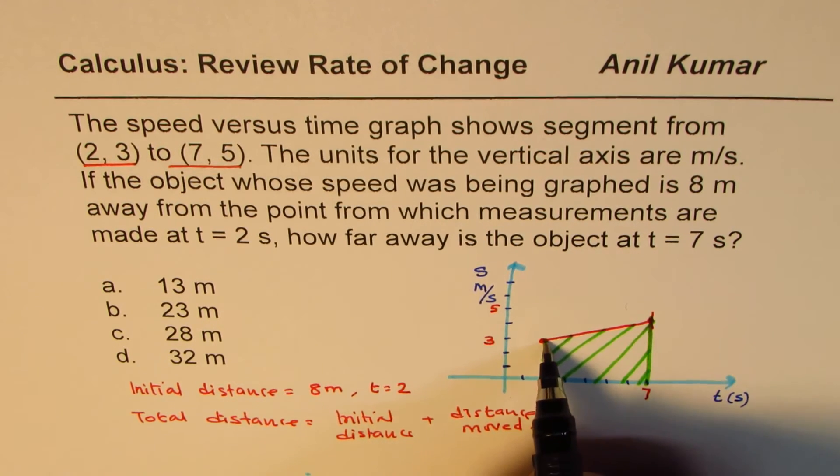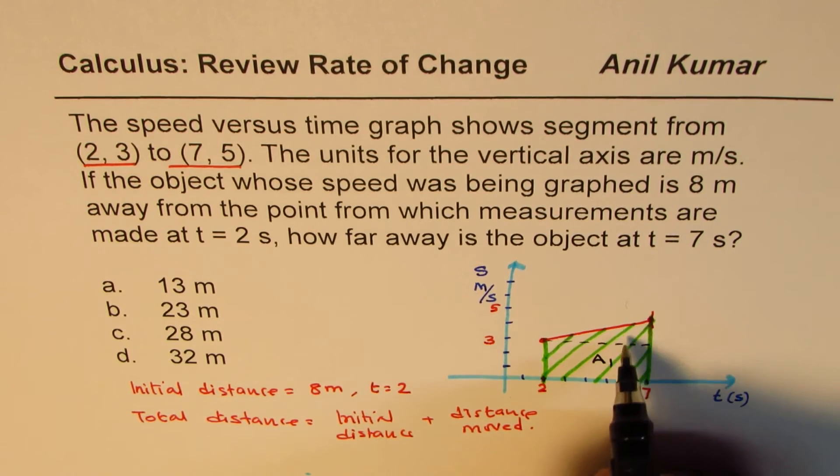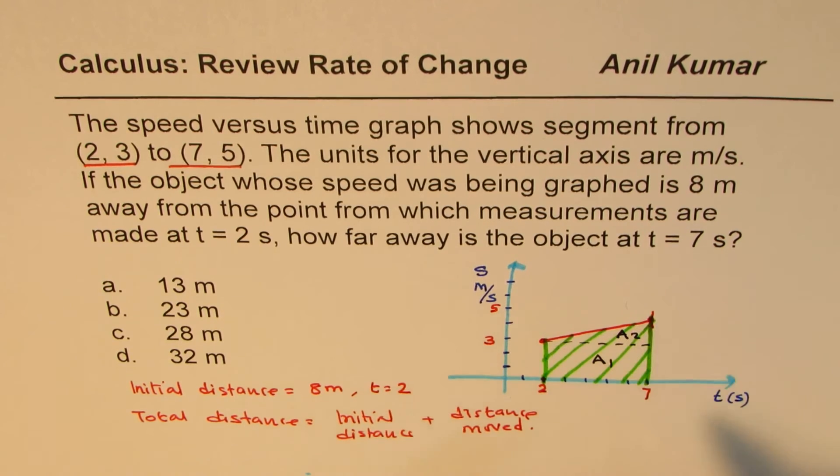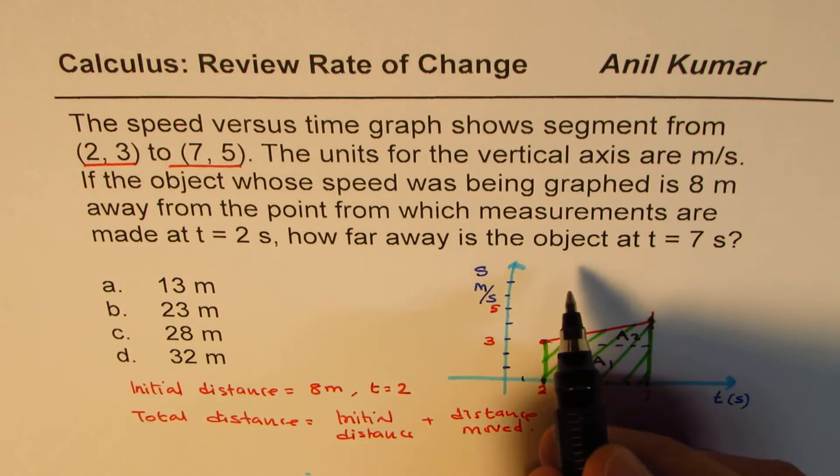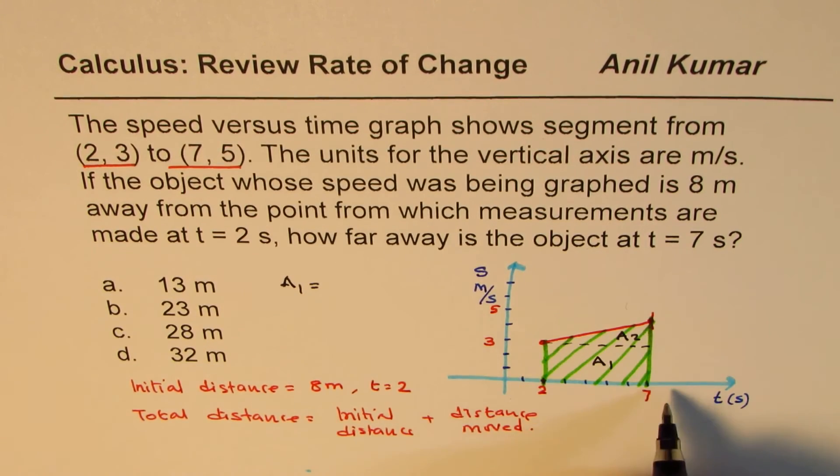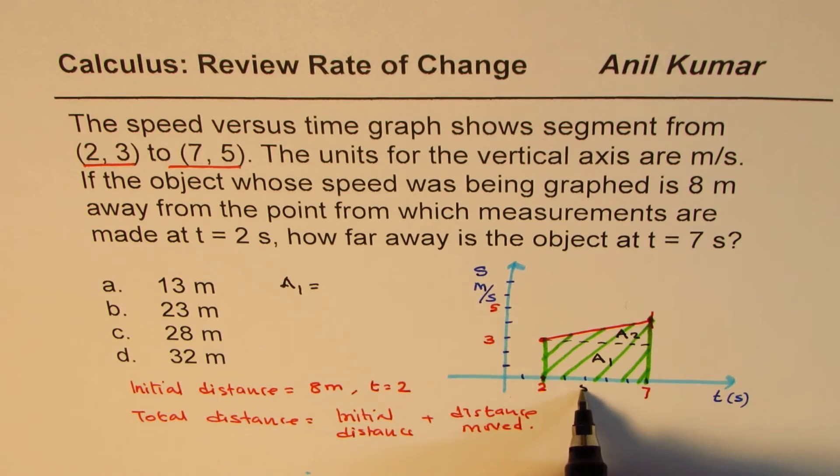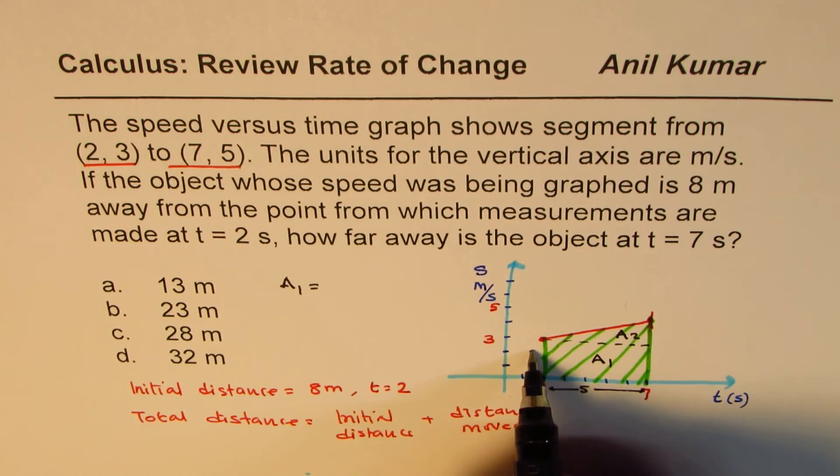This area could be divided into two parts: rectangle area, we call this A1, and the triangle area A2. Let's calculate these areas. From here we know A1, the area of this rectangle, is 5 units (7 minus 2, that is 5 units) and this is 3 units.